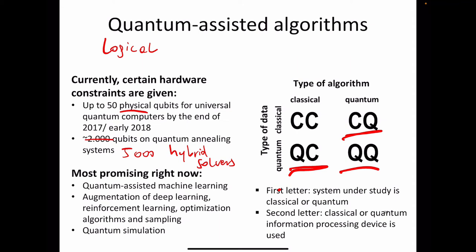The most promising directions right now are quantum-assisted machine learning — such as augmentation of deep learning and reinforcement learning — optimization algorithms, sampling, and simulation. There is strong overlap between machine learning and optimization because many ML problems are also optimization problems or can be converted into one. Machine learning, optimization, and simulation — particularly simulating molecules — are the main areas people are looking into.